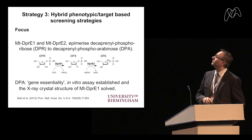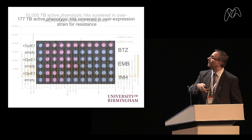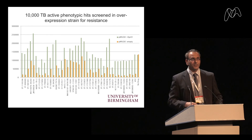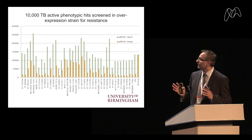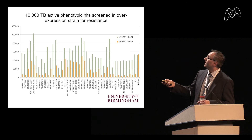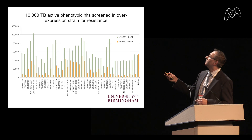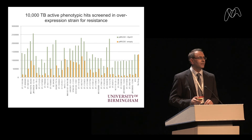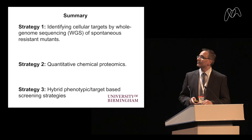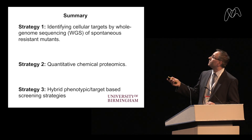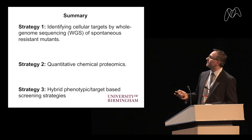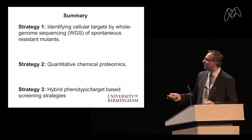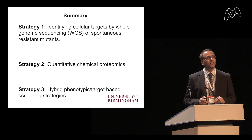The final strategy is a phenotypic hybrid approach. We applied this for DprE1: by overexpressing DprE1, we screened the entire 177-compound TB box set to see which hits become resistant when DprE1 is overexpressed, pulling out new hits. In summary, the translational part uses whole-genome sequencing of spontaneous resistant mutants to identify targets, quantitative chemical proteomics as a new tool for target identification, and a hybrid phenotypic strategy for identifying new targets.